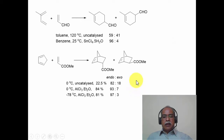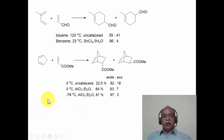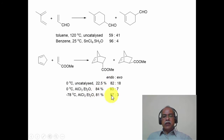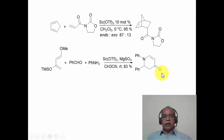The endo-exo ratio is also affected by Lewis acid catalysis. For the reaction between cyclopentadiene and methyl acrylate, the uncatalyzed reaction at 0 degrees gives only about 22.5 percent conversion with an endo:exo ratio of 82:18. With aluminum chloride, the reaction gives 84 percent yield at 0 degrees and the endo:exo ratio increases to 93:7. At even lower temperature, the reaction goes to 81 percent with an endo:exo ratio of 97:3. Lewis acid catalysis thus enhances both rate and endo selectivity, as well as ortho-para regioisomeric ratios.